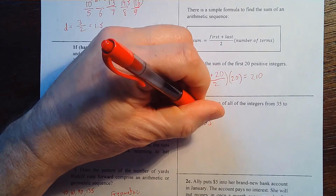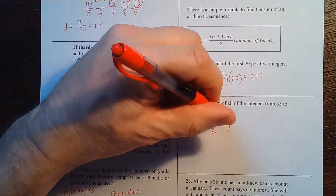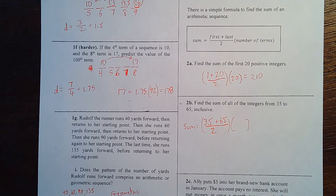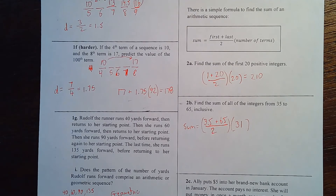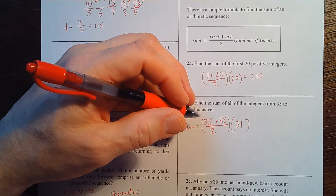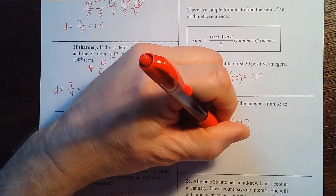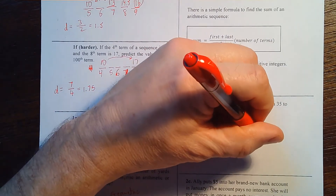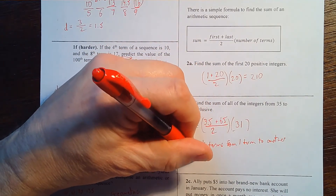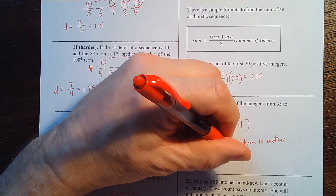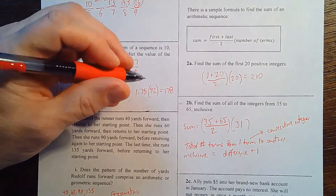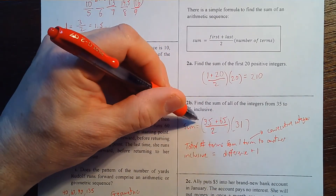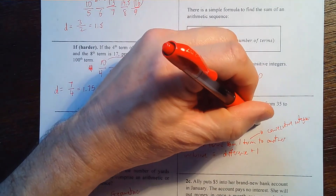In 2b, find the sum of all integers from 35 to 65 inclusive. The formula: first plus last divided by 2 — that's easy. But how many terms are there? It's not 30, it's 31. The number of steps from 35 to 65 is 30, but you add 1 to get the number of terms. So the formula for consecutive integers is: number of terms = difference between the two numbers plus 1. So: (35 + 65)/2 × 31 = 1550.